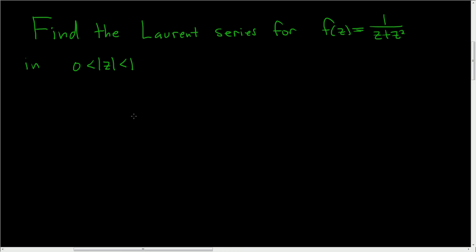Find the Laurent series for f(z) = 1/(z + z²) in the region 0 < |z| < 1. Let's go ahead and do this solution.